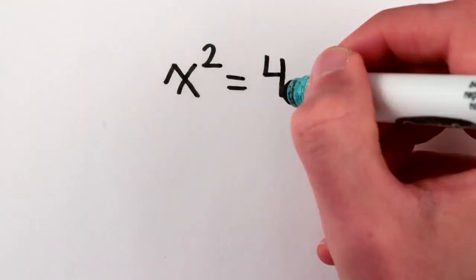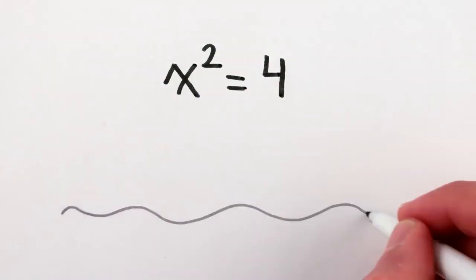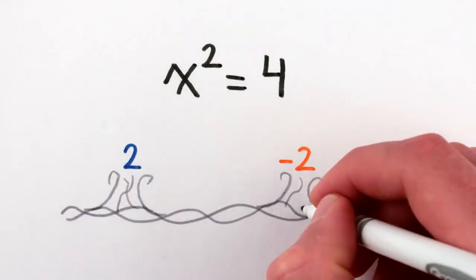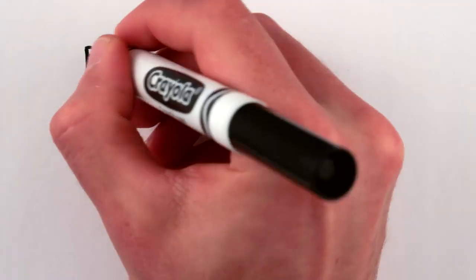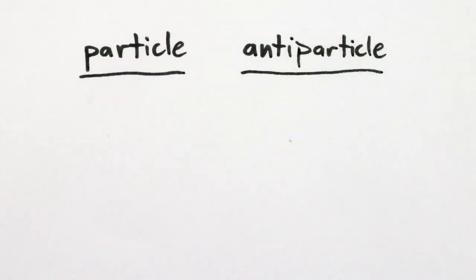Which is pretty much exactly like how the equation x squared equals 4 has two solutions, 2 and minus 2, with the same value but opposite sign, and when they meet, they annihilate. Every fundamental particle has an antiparticle.